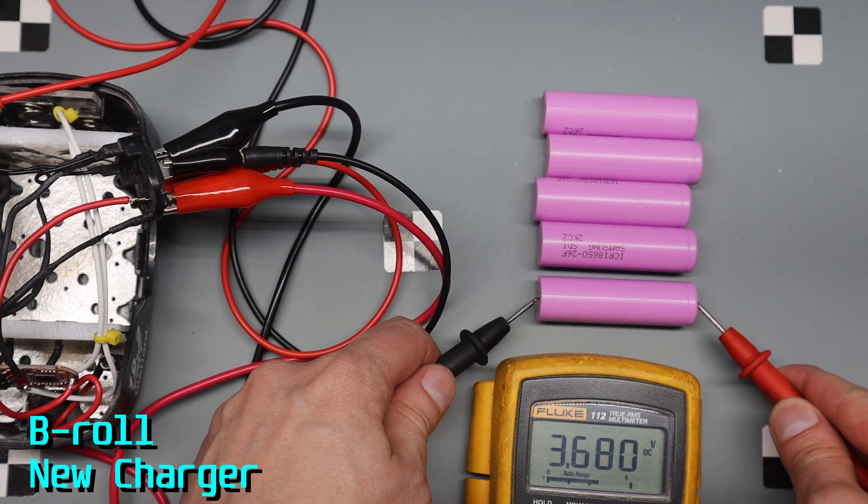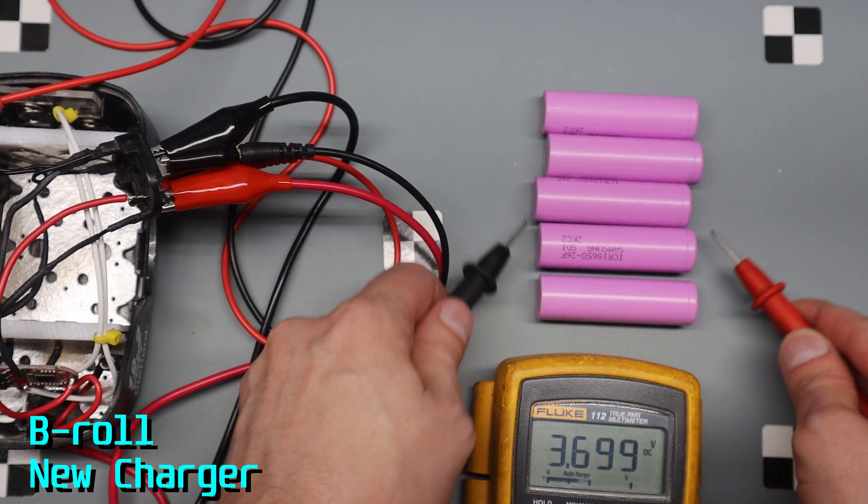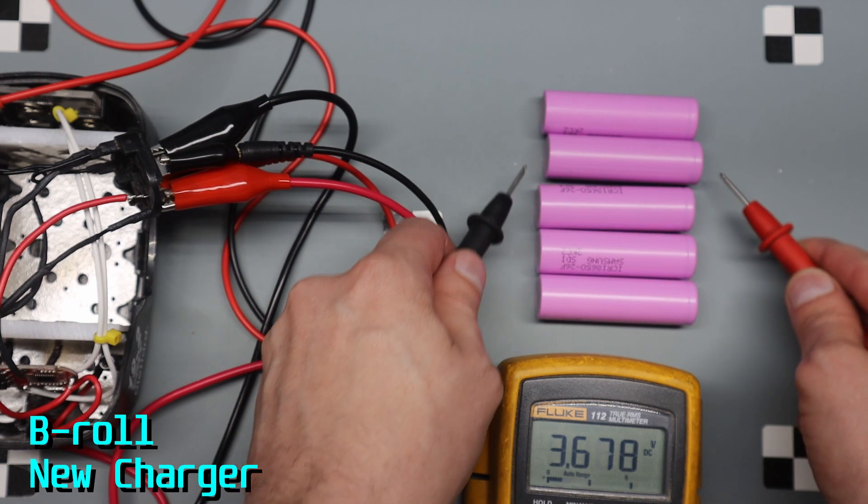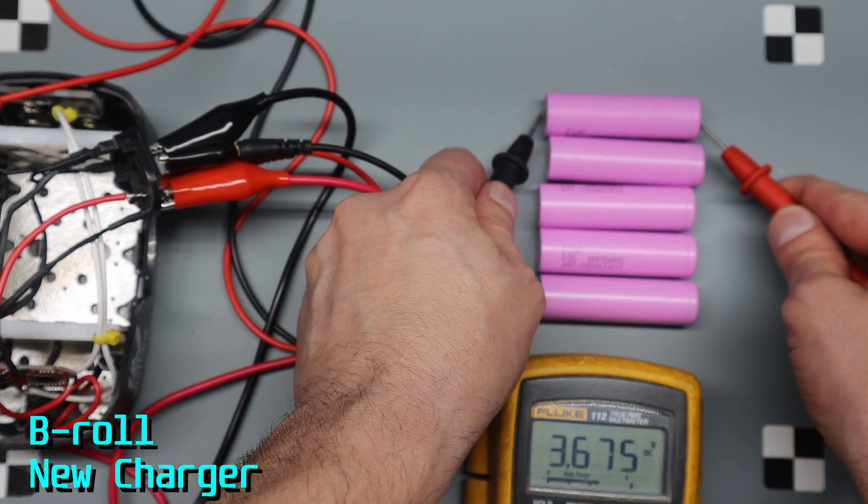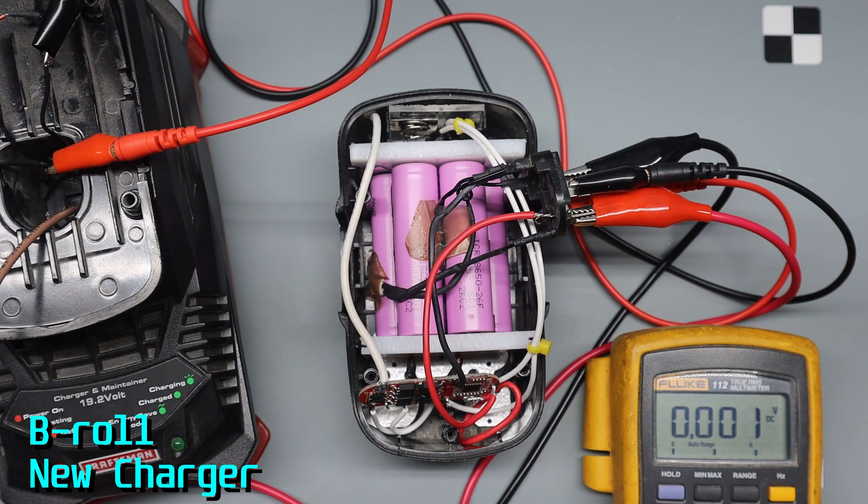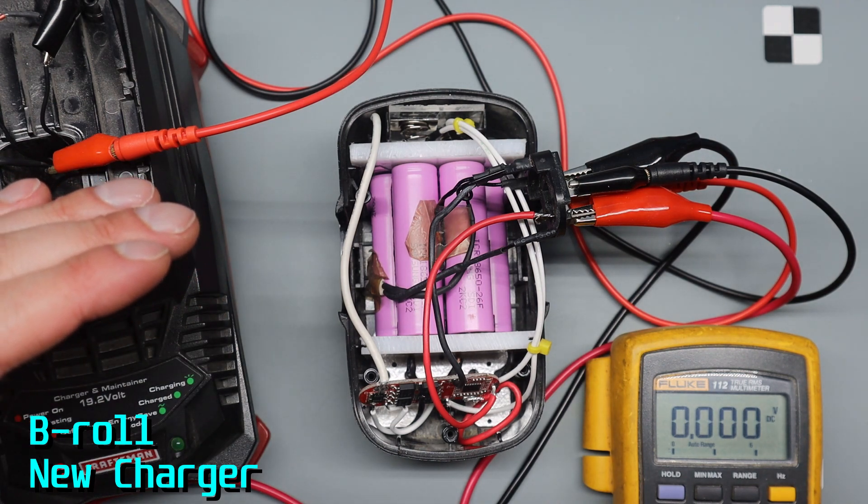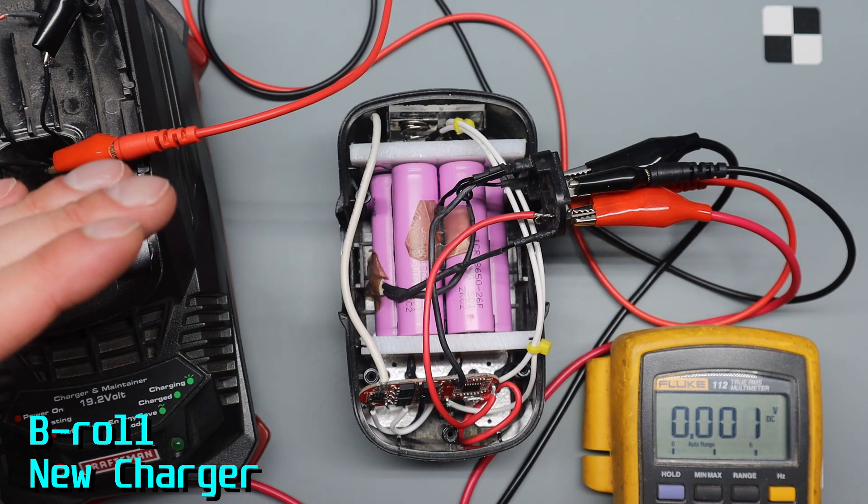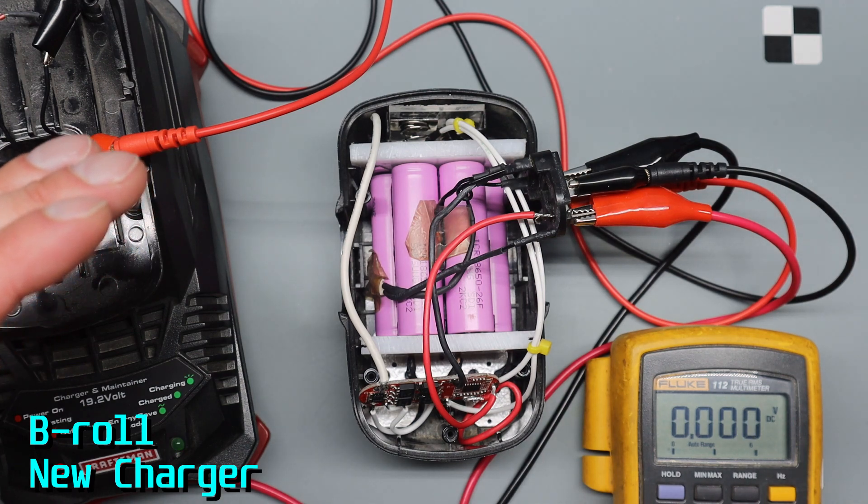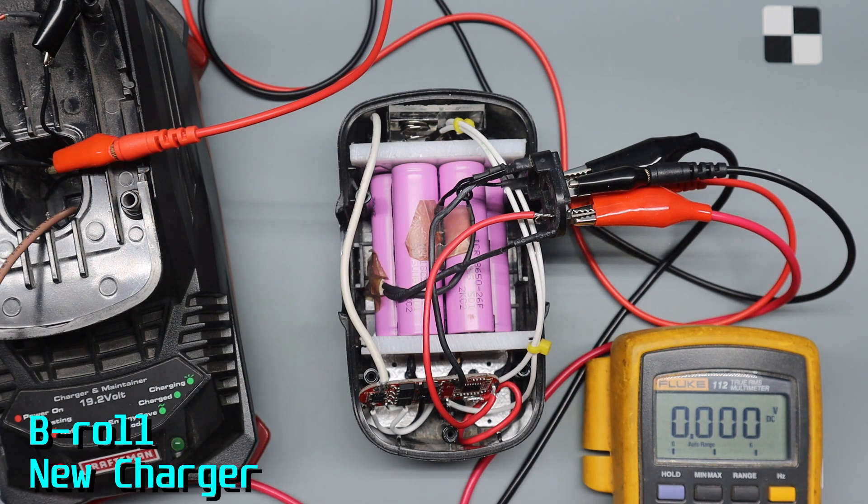But with the newer version of the charger, this one also showed charging. But when it got to the end of the charge cycle, instead of having the solid charge light, it went into the pulsating defective light. But it was still fully charged.